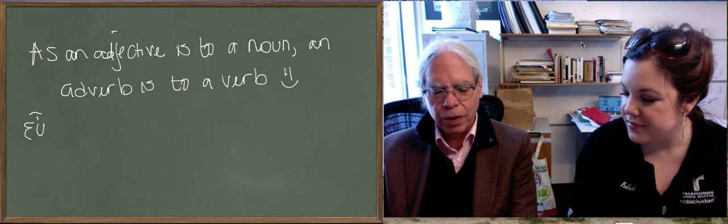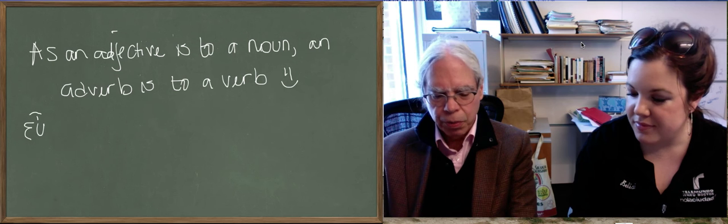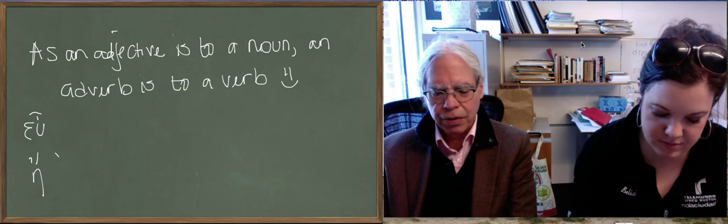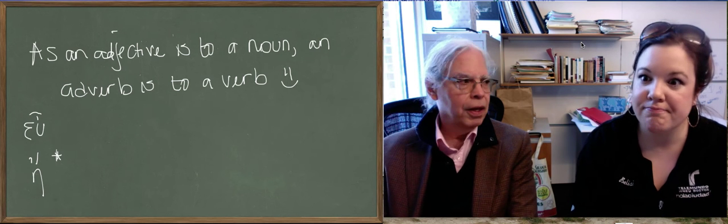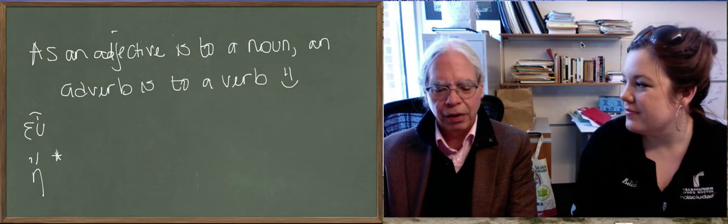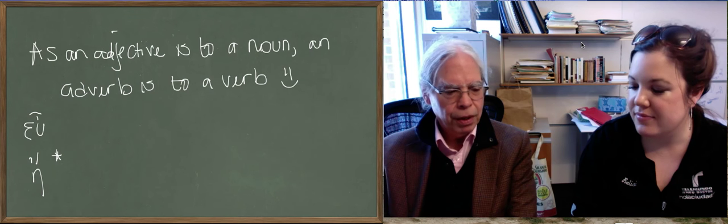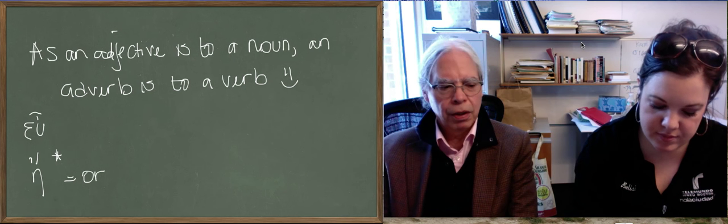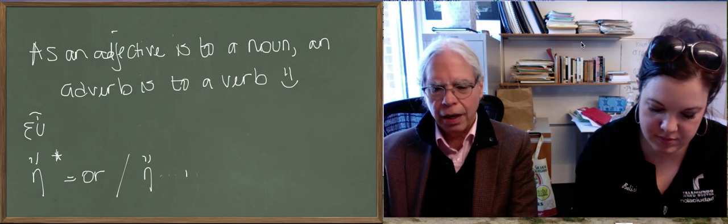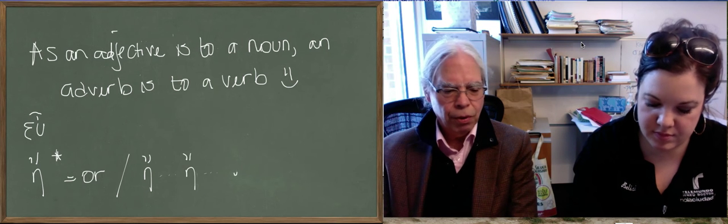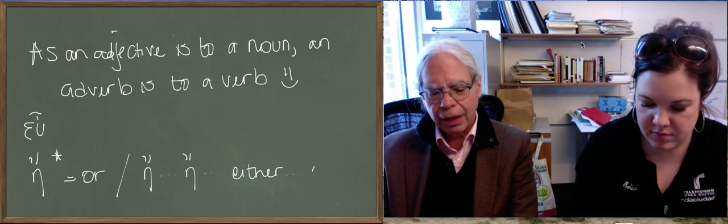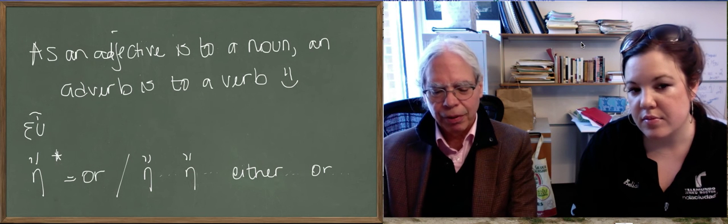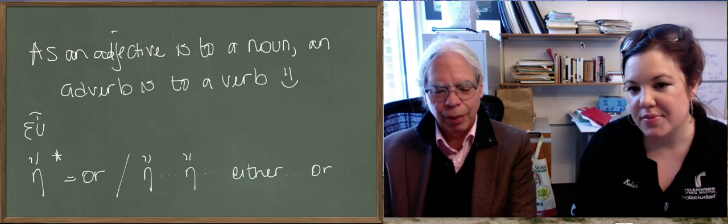Next word, eh, just the letter eta with a smooth breathing and an accent. Notice those are really important things. There are actually two or three words in Greek that consist of the letter eta and they have different accents. And then if you have a rough breathing, it's something else altogether. So you have to pay attention to the diacritics. And it means or. When there are two in connection with each other, if you say eh x, eh y, then it means either or.